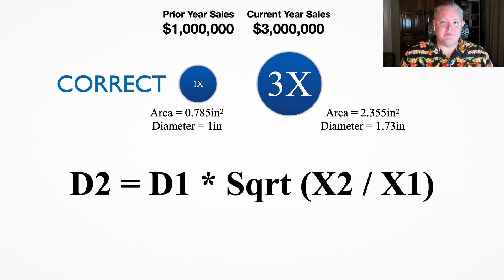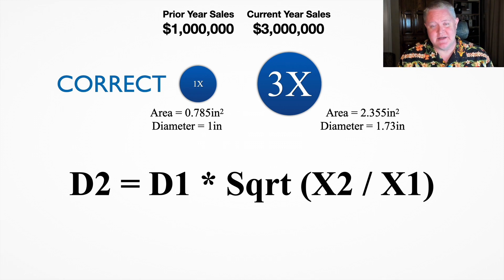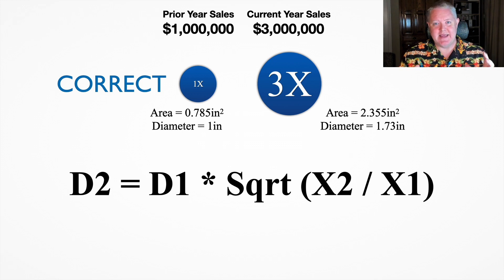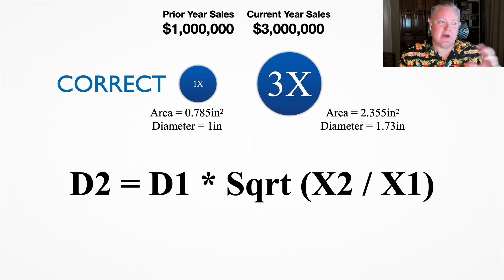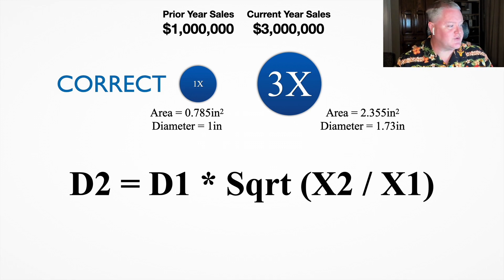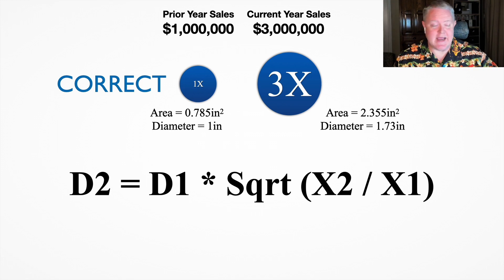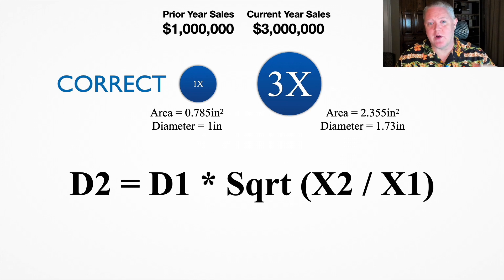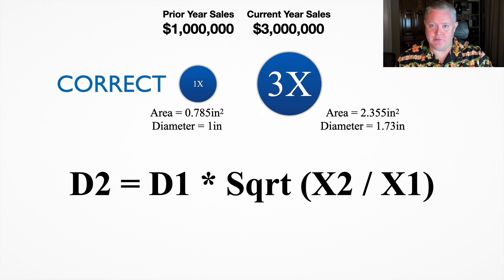So that's a simple but not obvious formula to calculate circle sizes that a lot of people struggle with, and it's always in relation to the initial circle. The formula works with the diameter of the second circle, D2, equals the diameter of the first circle, D1, times the square root of the second set of data over the first set of data — x2 over x1.